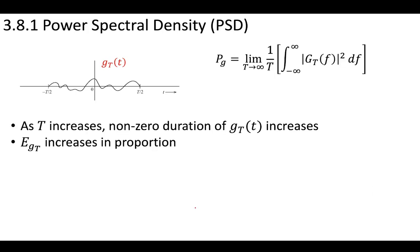As the period increases — in this limit, we want T to go to infinity — the non-zero duration of this truncated signal increases. As our period gets bigger and bigger, we're going to have a change in the non-zero duration, so this signal is going to get larger and larger.